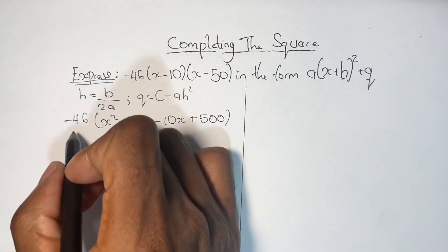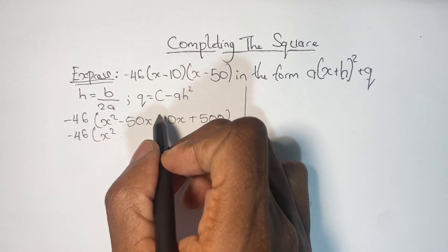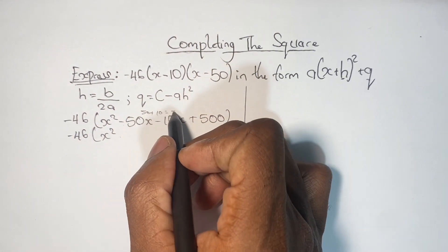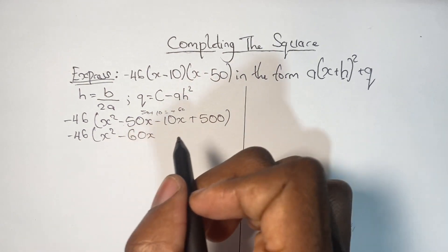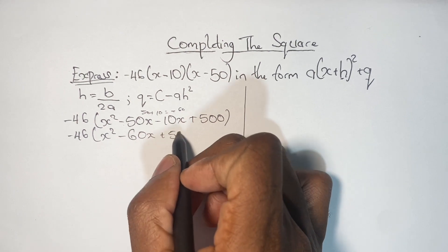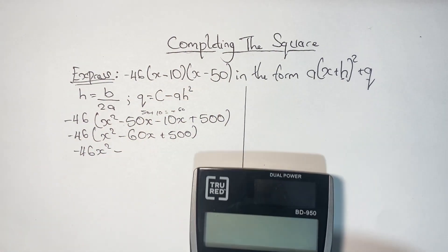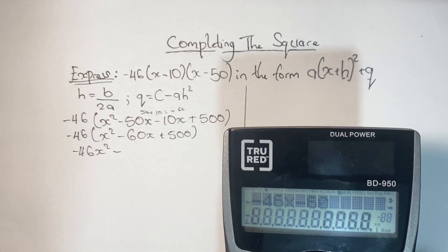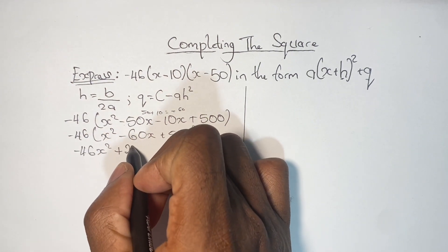Just to rewrite that and gather our like terms, we have negative 46 open bracket X squared minus — we know that when you're subtracting two negatives it's the same as adding them, and the result gets a negative sign. So 50 plus 10 is 60, giving us negative 60X. For the 500 we just have plus 500. So we go ahead and multiply into the brackets. Negative 46 times 60 gives us 2760, and a negative times a negative gives us a positive, so we should have positive 2760X.